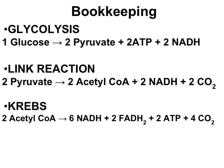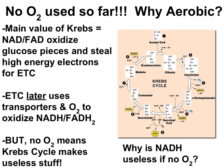Both the link reactions and Krebs cycle reactions take place in the mitochondrial matrix. What's a bit unusual is that even though these are aerobic processes requiring oxygen, we haven't seen oxygen yet in any of these reactions. But oxygen is coming — it is needed later for the electron transport chain to help oxidize and take the electrons from NADH and FADH2, converting those high-energy electrons into high-energy ATP.